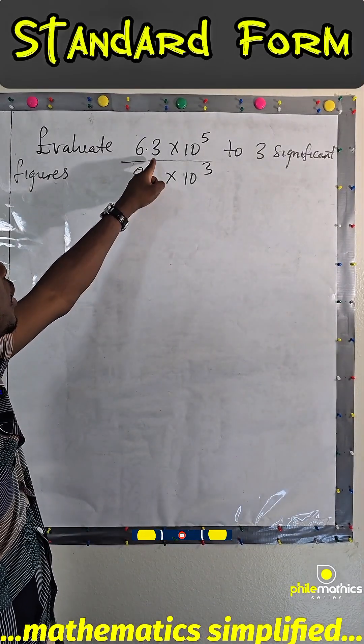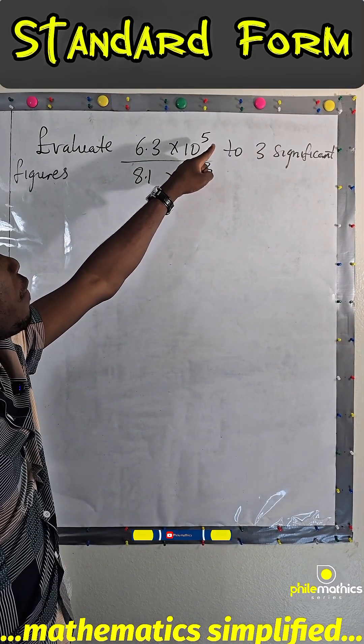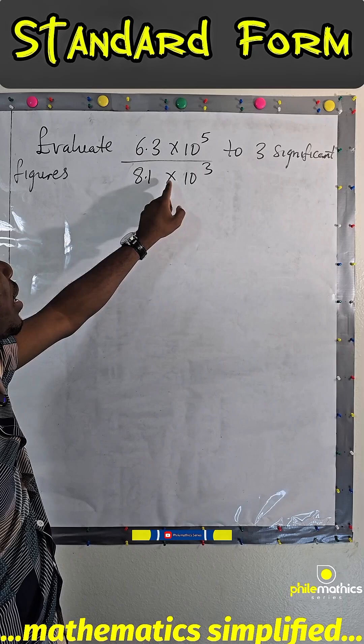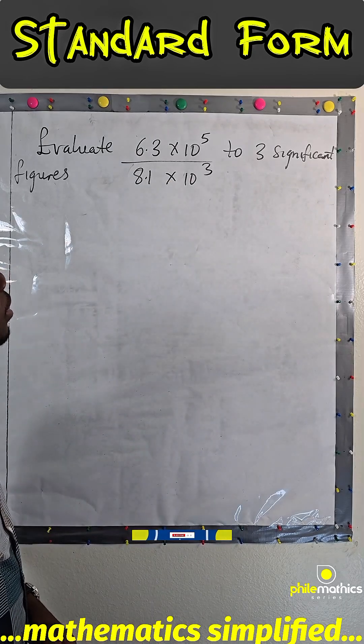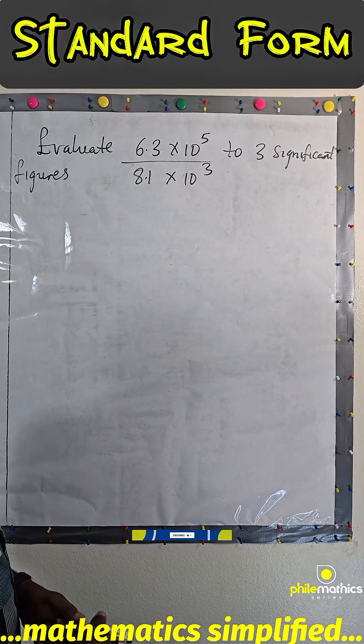We are asked to evaluate 6.3 times 10 to the power of 5 over 8.1 times 10 to the power of 3 to 3 significant figures.